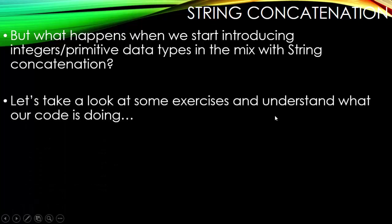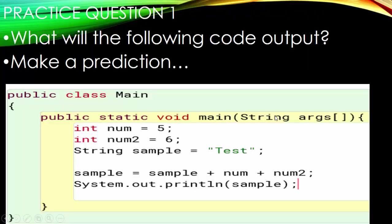Let's take a look at some exercises and understand what our code is doing. We have six questions we're going to look at, and we'll go over all the answers at the end. We have two integers: num set to 5, and num2 set to 6. We also have a string variable called sample, which is set to 'Test' with a capital T.